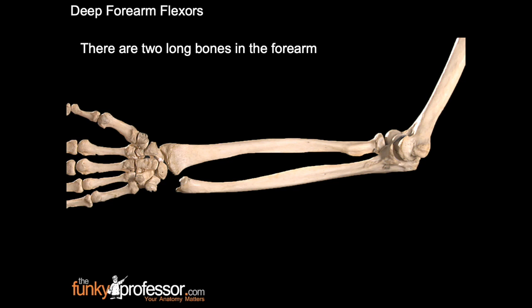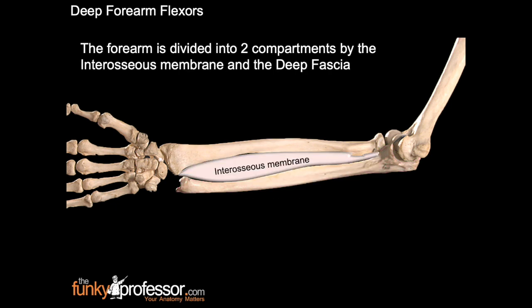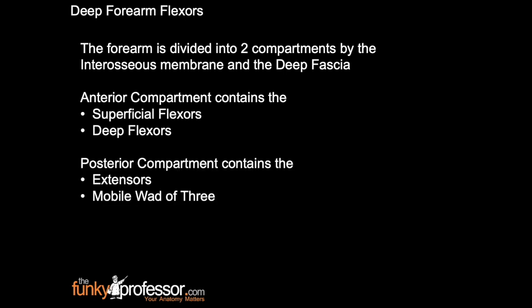There are two long bones in the forearm. The radius lies laterally under the thumb. The ulna lies medially under the little finger. The forearm is divided into two compartments by the interosseous membrane and the deep fascia. The anterior compartment contains the superficial flexors and the deep flexors. The posterior compartment contains the extensors and the mobile wad of three.